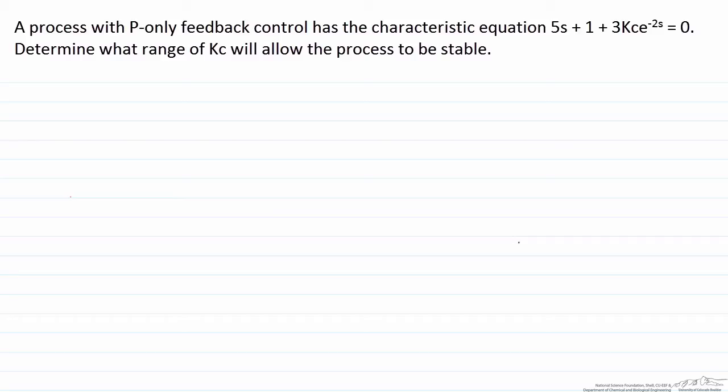In the problem statement here we are given a characteristic equation for a process which is being controlled by P-only control, and our goal is to determine the range of Kc that will allow for the process to ensure that it is stable. So before we get into that let's talk a little bit about dead time.